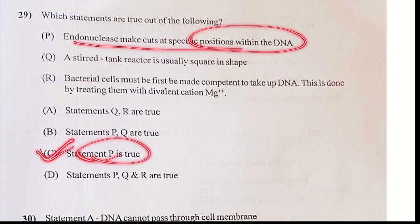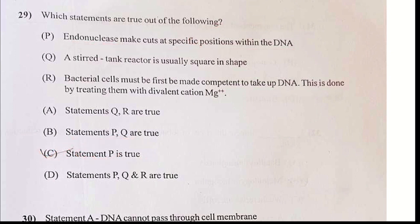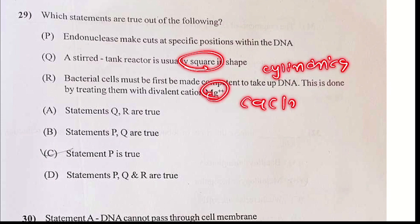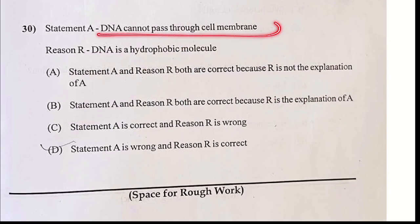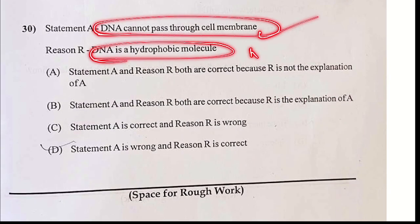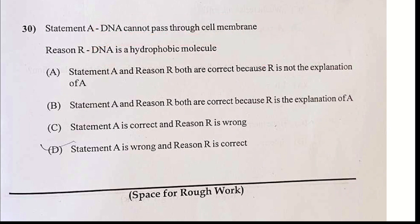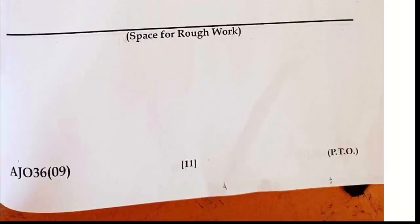The restriction enzyme makes sequence-specific DNA cuts. The restriction enzyme tank is not square — it is a cylindrical shape. It is treated by cesium chloride. DNA cannot pass through the cell membrane — this one is correct. But DNA is not a hydrophobic molecule; DNA is a hydrophilic molecule due to the phosphodiester bond. That is why statement C is correct but reason R is wrong. Your answer should be C.